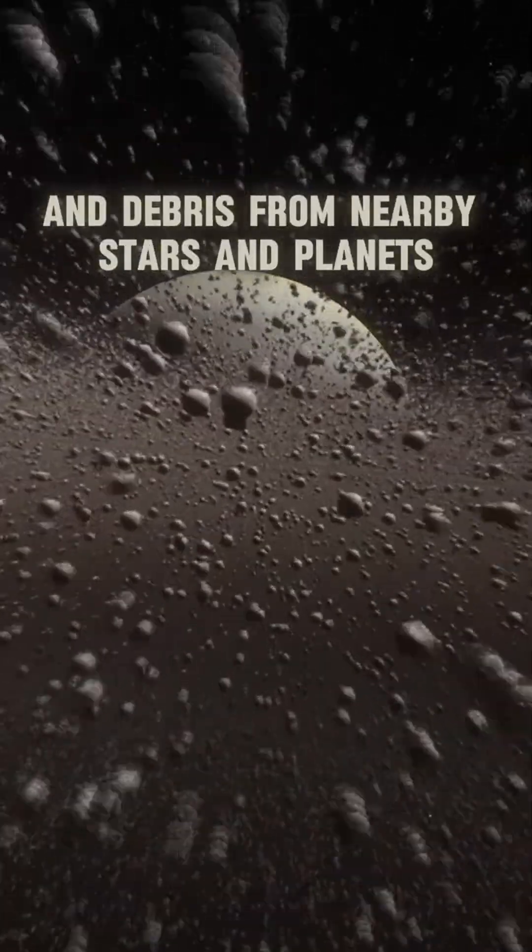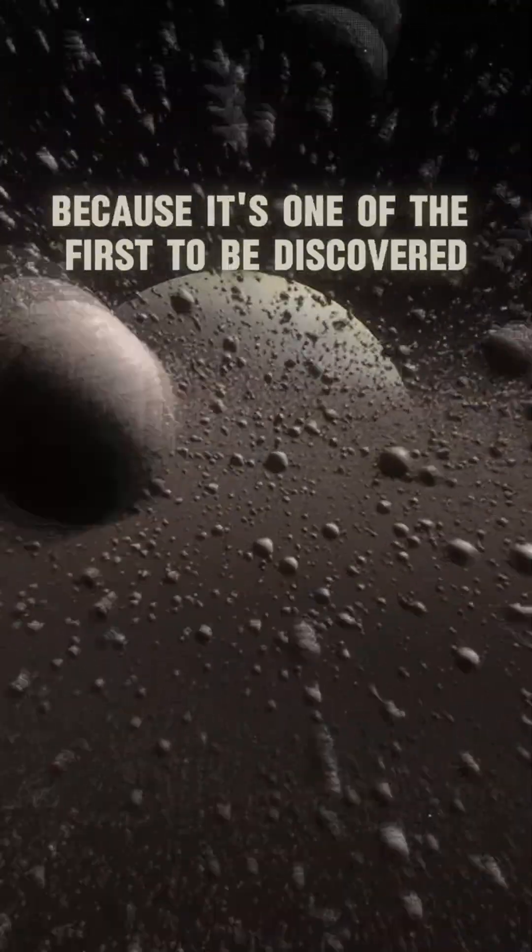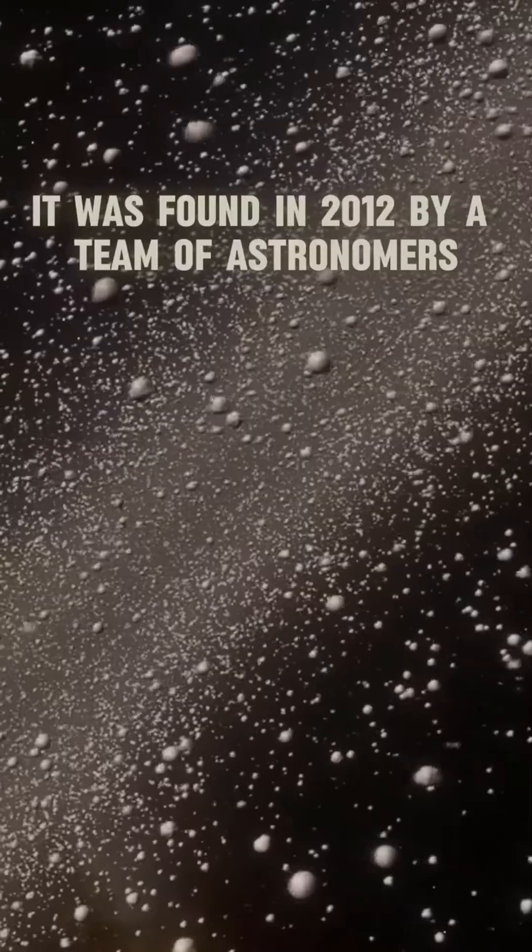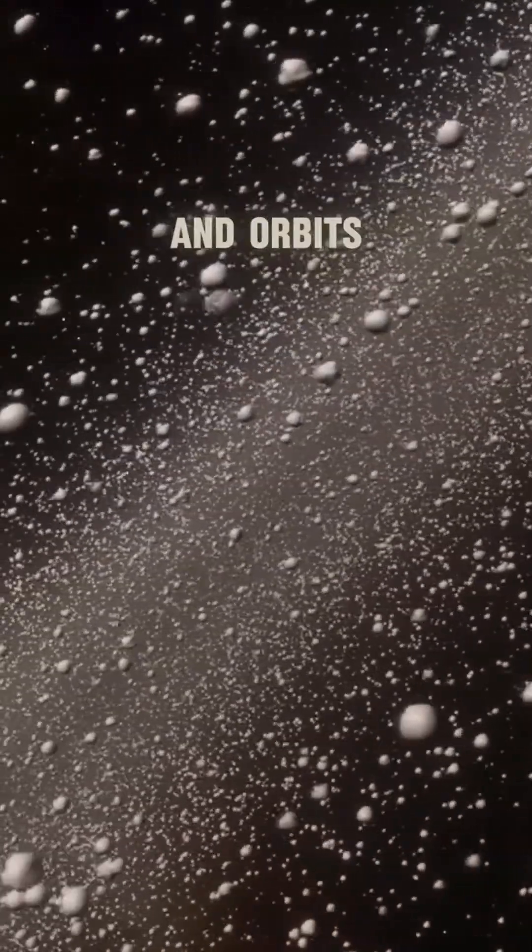They're made up of dust and debris from nearby stars and planets. This planet is special because it's one of the first to be discovered with a ring system like this. It was found in 2012 by a team of astronomers who were studying the star it orbits.